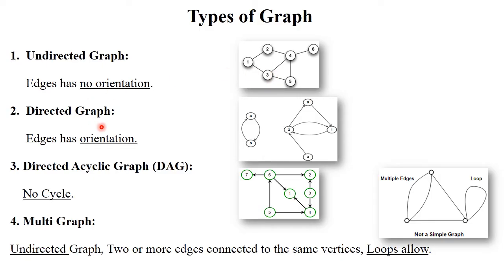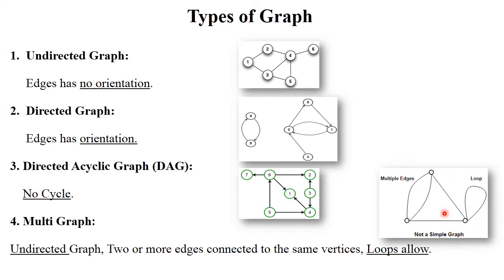Next is directed graph. In a directed graph, edges have orientation — each edge has a particular direction shown by an arrow. Next is directed acyclic graph, also called DAG. In a directed acyclic graph, no cycle is formed. Next is multigraph — it is an undirected graph where loops are allowed, meaning two or more edges are connected to the same vertex.